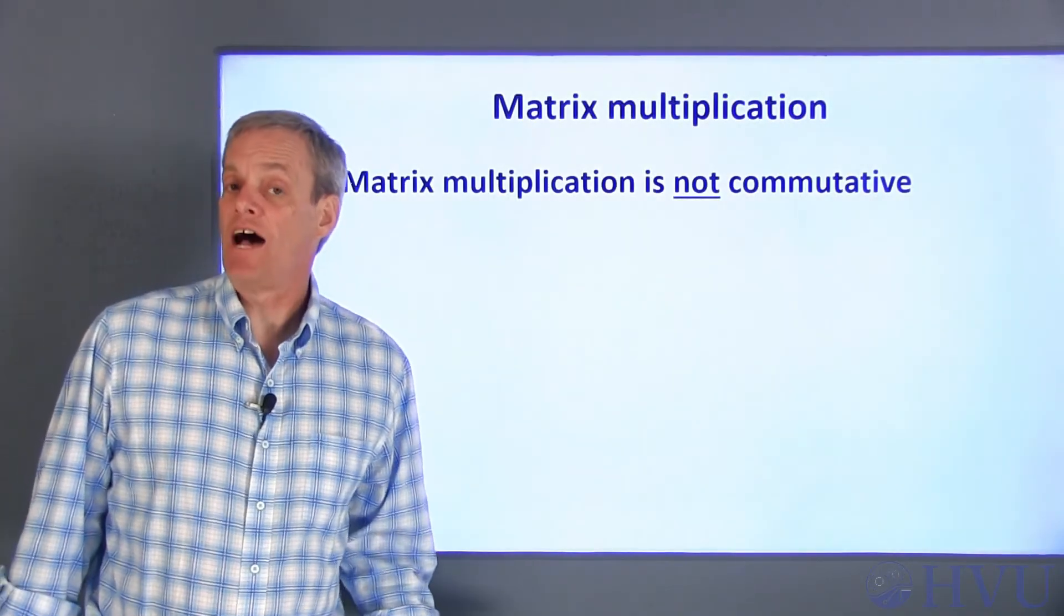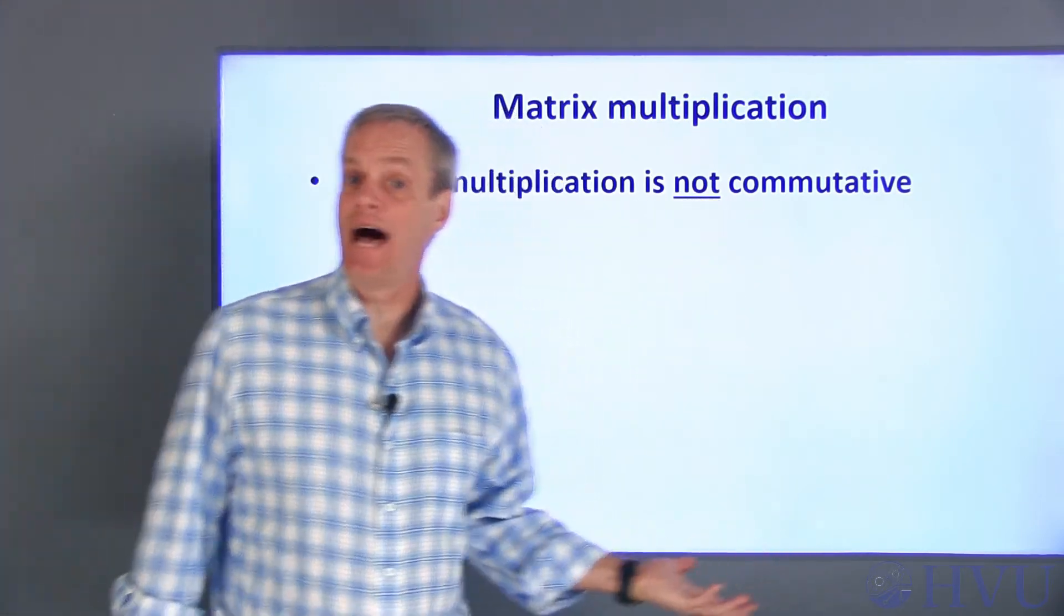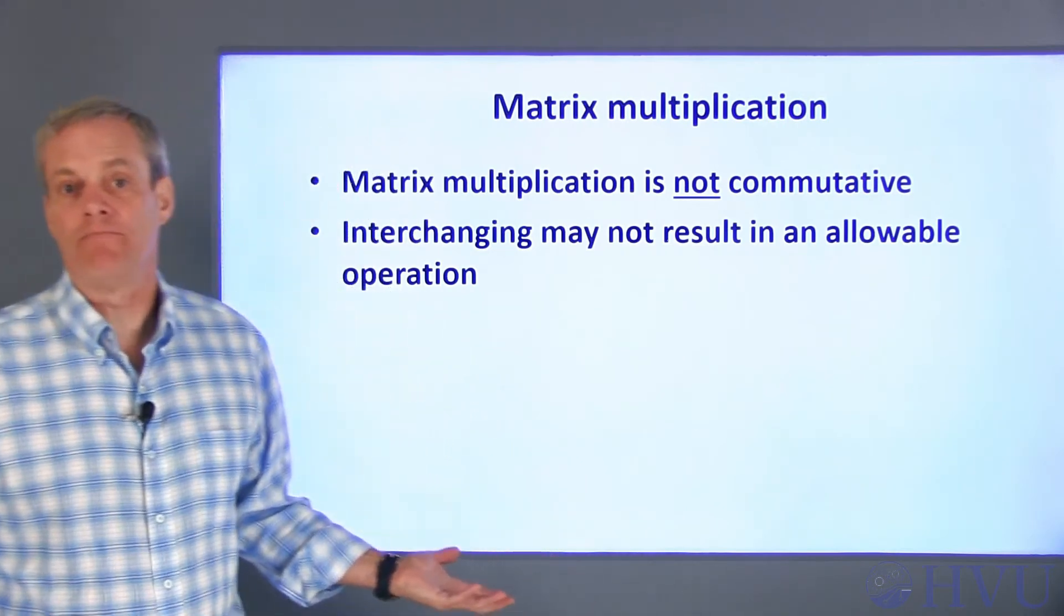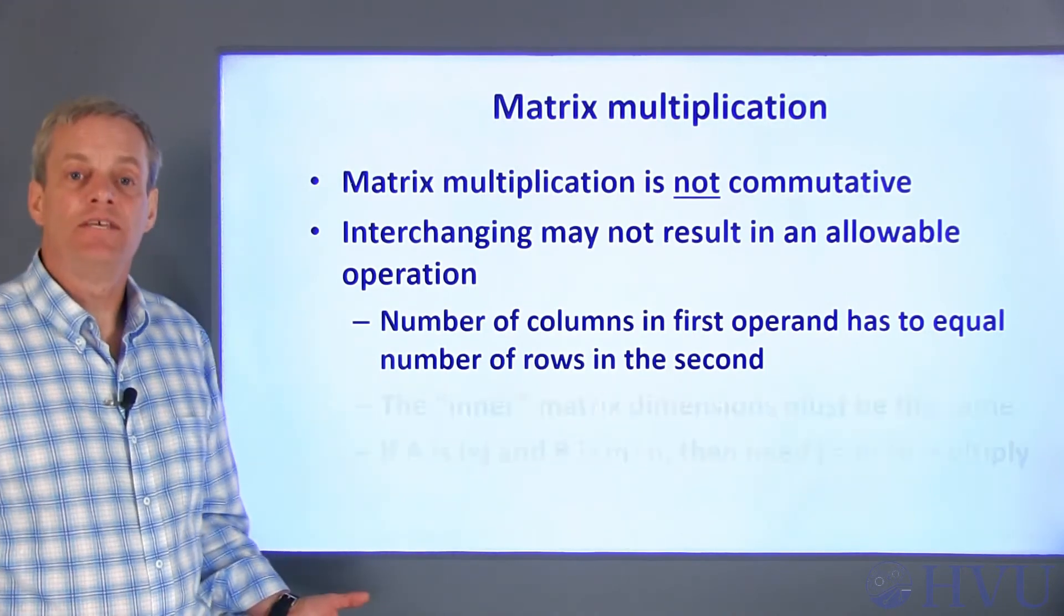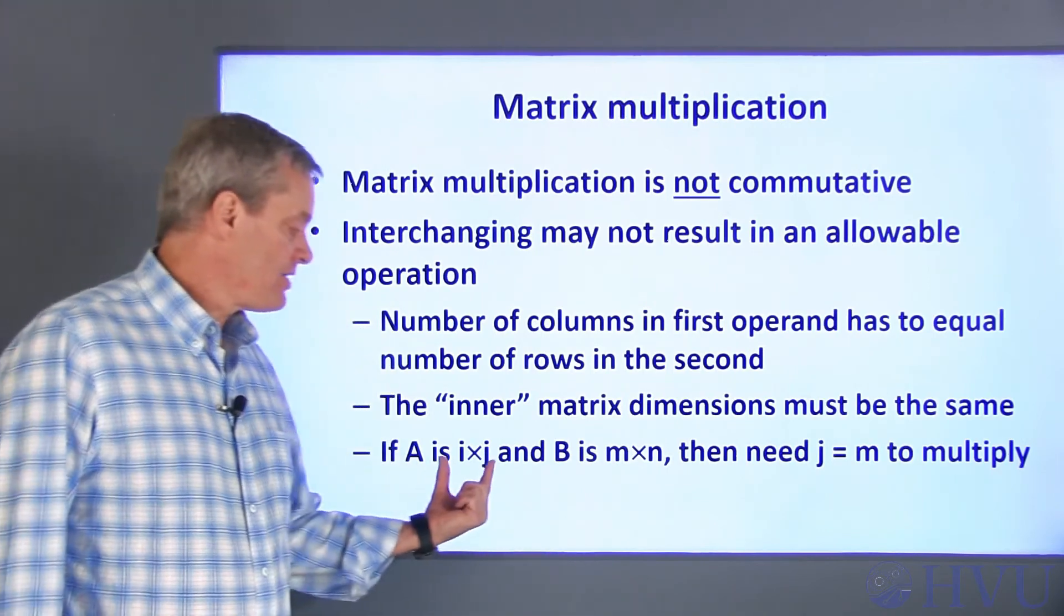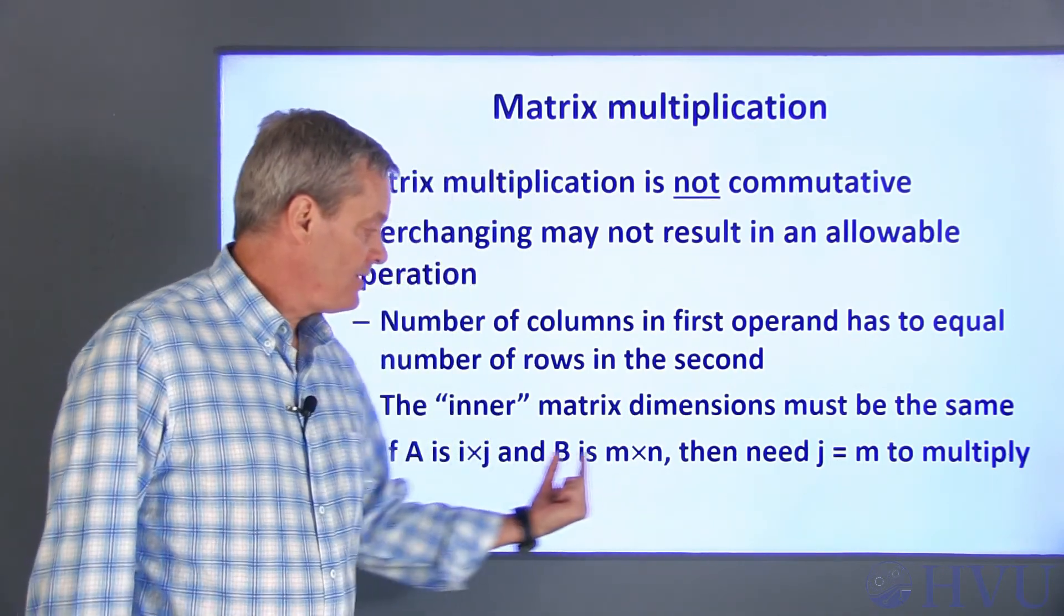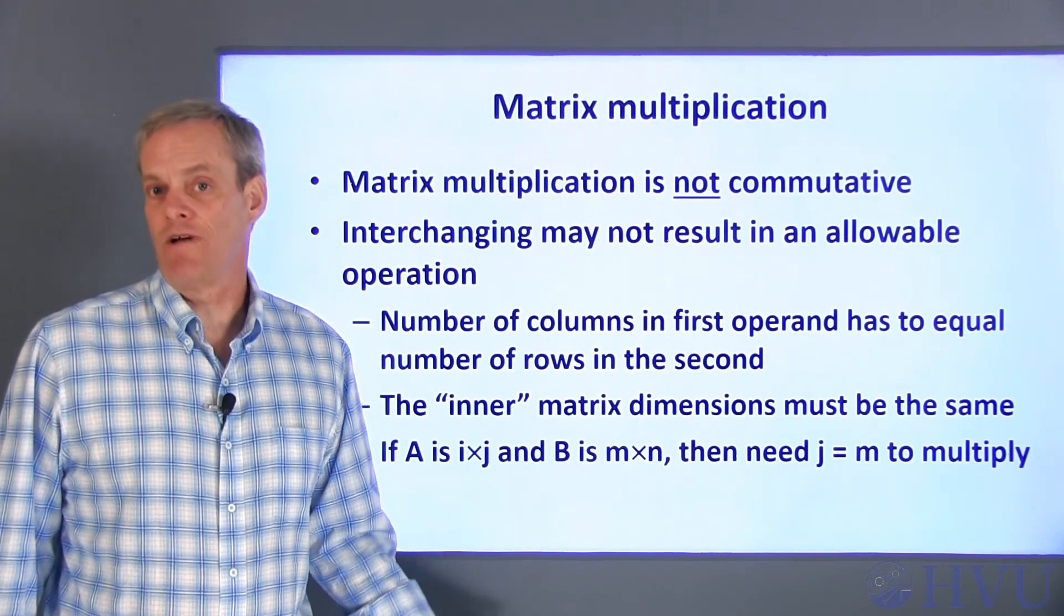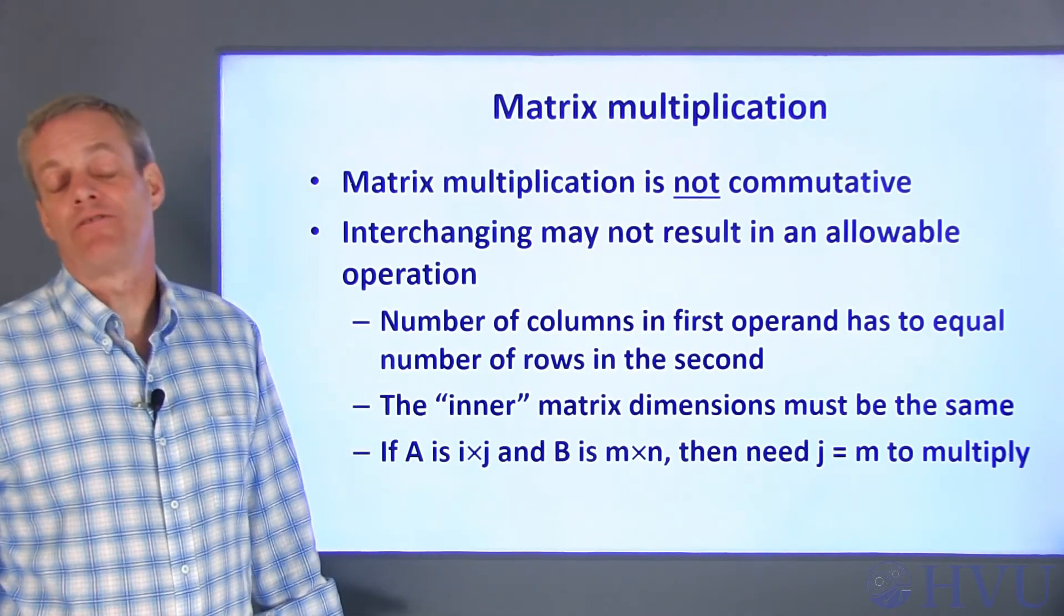Finally, I want to make a couple of comments about matrix multiplication. Matrix multiplication is not commutative, so that A times B is not the same as B times A. In fact, switching the order of the operands may not even result in a legal operation. Recall that the number of columns in the first operand has to be the same as the number of rows in the second operand. This condition is often summarized as a requirement that the inner array dimensions must match. So if A is an array with I rows and J columns, and B has M rows and N columns, I need J to be equal to M in order to multiply them together. Notice that here, at least, I am using dimension differently than I have been using it for arrays. I am now using it as a number of elements in a particular direction in the matrix, which is consistent with matrix notation rather than array notation.